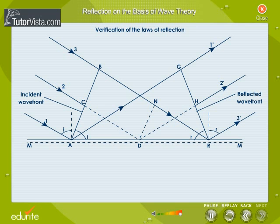The right triangles AGR and ABR are congruent because they have the same hypotenuse and BR is equal to AG. Here, the angle of incidence I is equal to angle BAR and the angle of reflection R is equal to angle GRA.